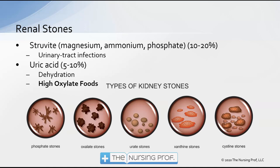Another type of stone is called a struvite stone, which is a magnesium ammonium phosphate stone. This is the second most common type and accounts for about 10 to 20 percent of stones. It is associated with urinary tract infections. So if we see that the patient has a UTI, or we know that the patient has gout, we can probably look for one of these types. If the patient doesn't have either of those conditions, it is most likely going to be a calcium-based stone.